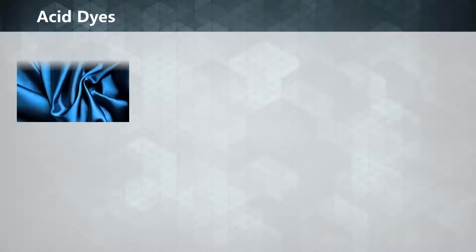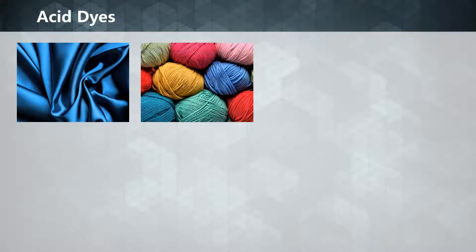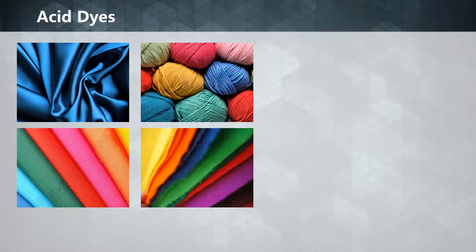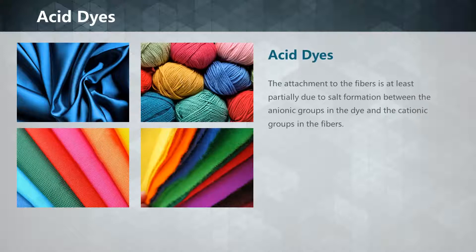Acid dyes are water-soluble anionic dyes used in the dyeing of fibers such as silk, wool, nylon, and modified acrylic fibers. The attachment to the fibers is at least partially due to salt formation between the anionic groups in the dye and the cationic groups in the fibers.